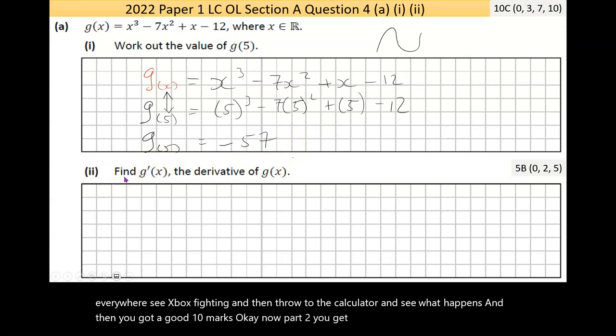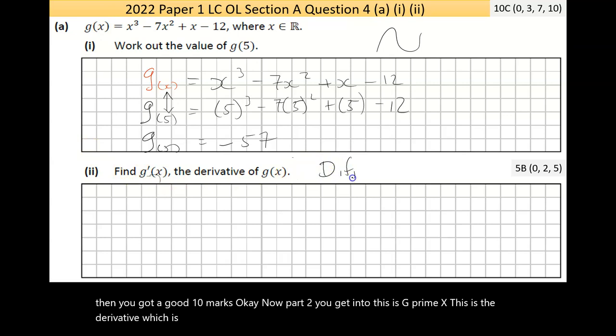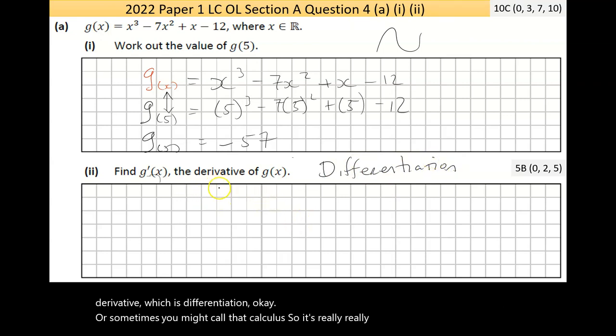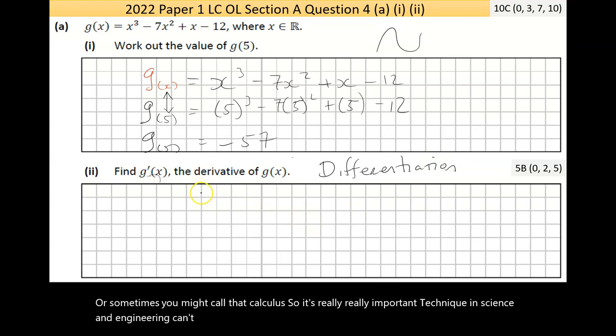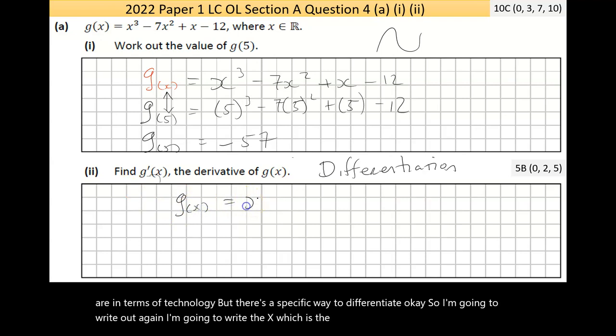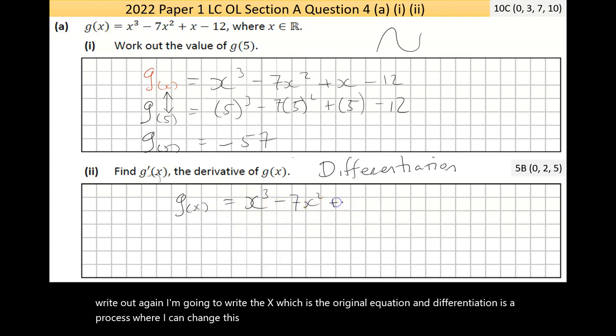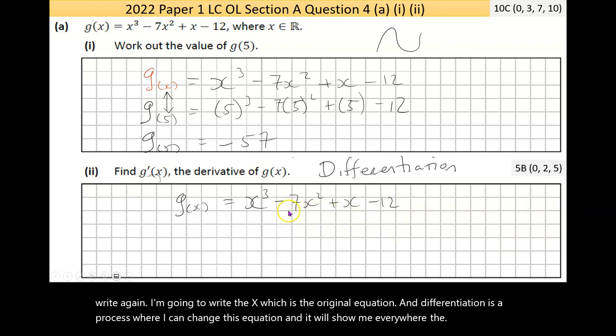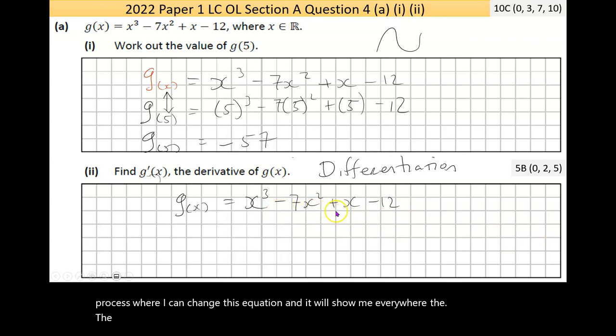Now part 2, this is g prime x. And this is the derivative, which is differentiation, or sometimes you might call that calculus. So it's a really important technique in science and engineering. It can't be expressed how important that is for humanity and got us to where we are in terms of technology. But there's a specific way to differentiate.